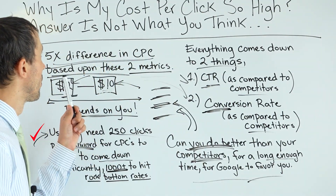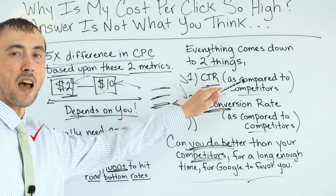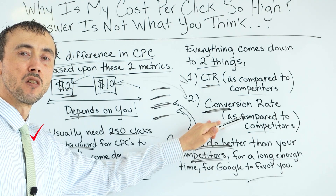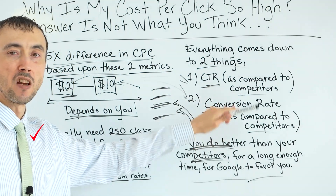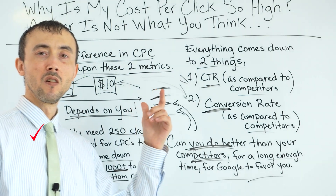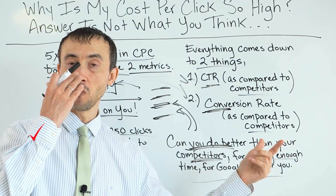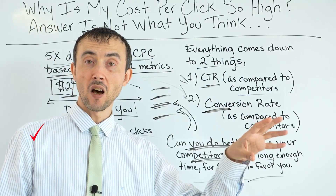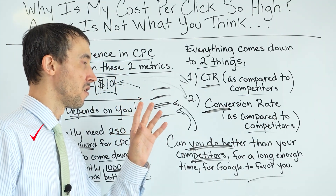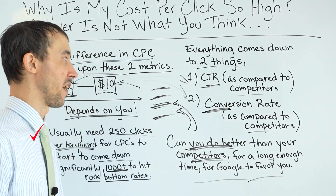So why is my cost per click so high, to sum it up? Your ad sucks. Your landing page sucks. Or a combination of both. You can tell by looking at your quality scores on each one of your keywords to back up what I'm saying. But that's the answer completely distilled down to a tight little package.